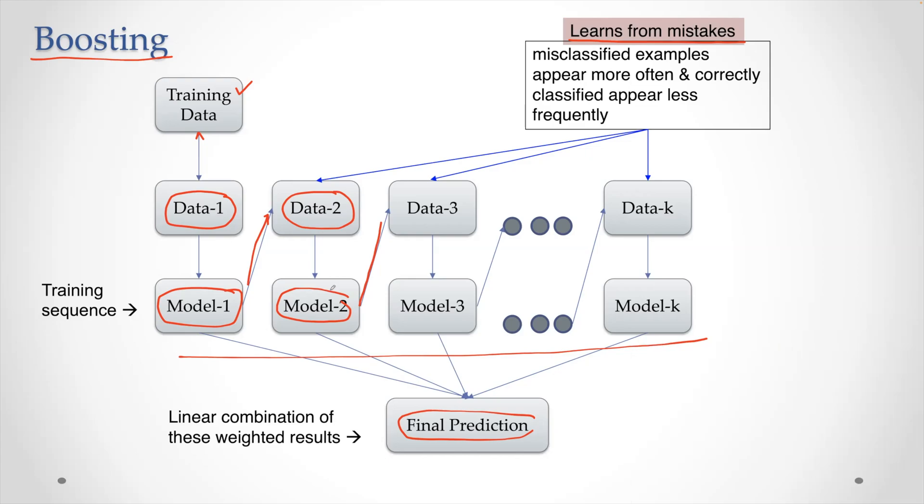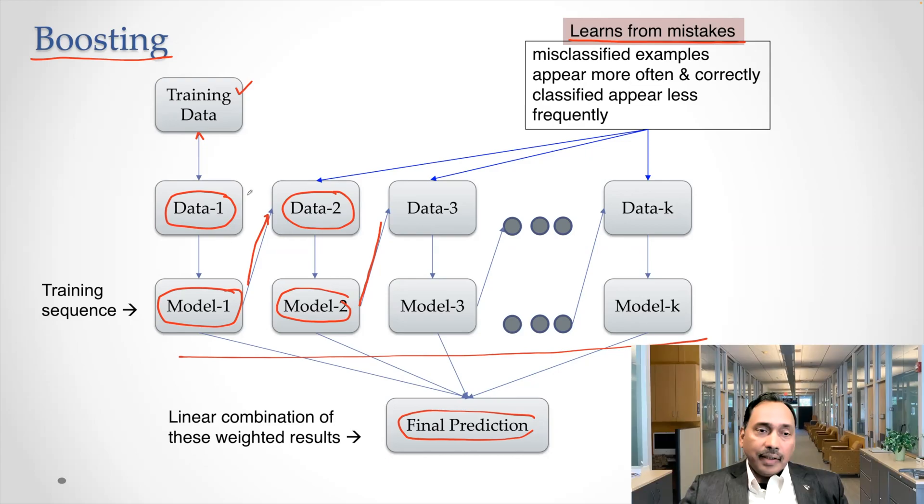And your final prediction becomes a linear combination of all these results that you get. So one thing you notice here is unlike bagging and random forest data one in data, these K data points are not independent of each other. So data two obviously depends on data one, whatever model is coming out of data one and similarly data three depends on data two. So unlike previous two cases where each data was independent of each other here, the training happens in sequence, not in parallel. You cannot do that.